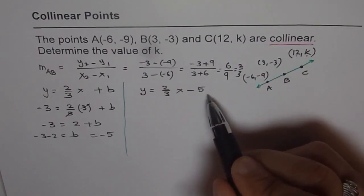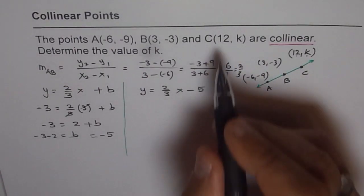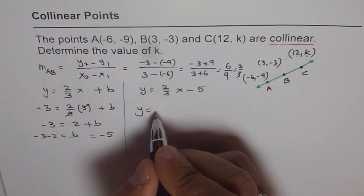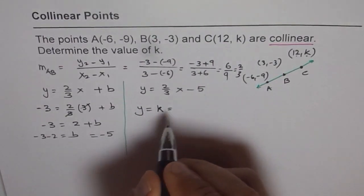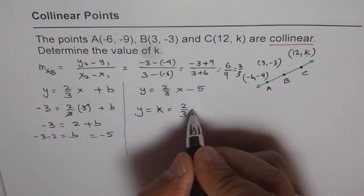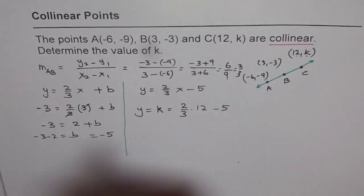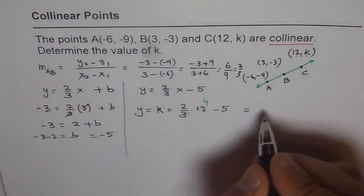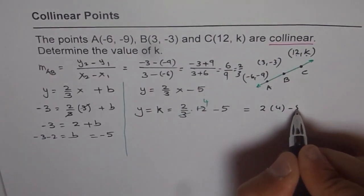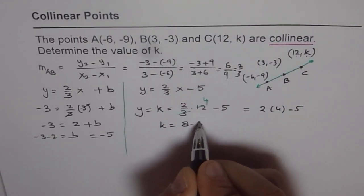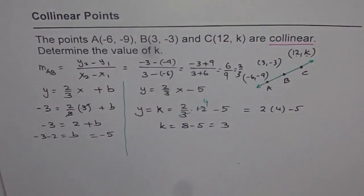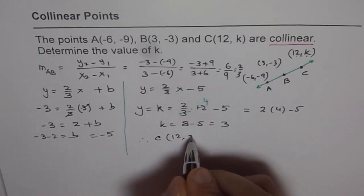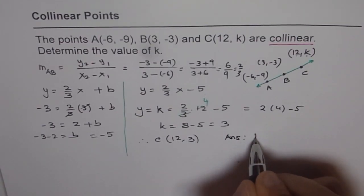That is the equation which represents a line through points A and B. Now if C is collinear, it should be on this line. We are given X value of C, that is 12. We'll substitute 12 here and find what Y is. We could also say Y should be K. So K equals 2/3 times 12 minus 5. This could be simplified - this goes 4 times. So K equals 2 times 4 minus 5. K equals 8 minus 5, which is 3. So that is the value of K. Therefore, C should be (12, 3). The answer is K equals 3.